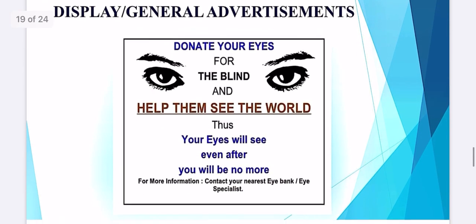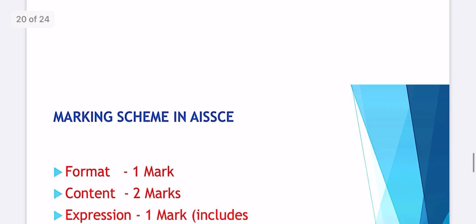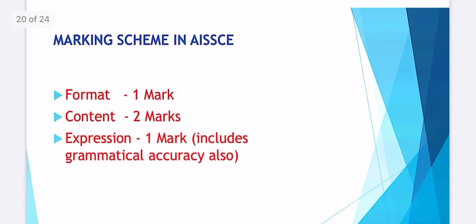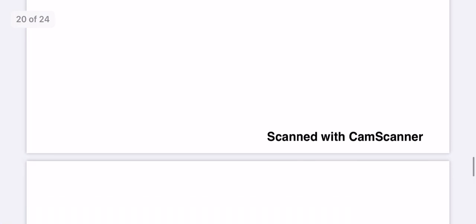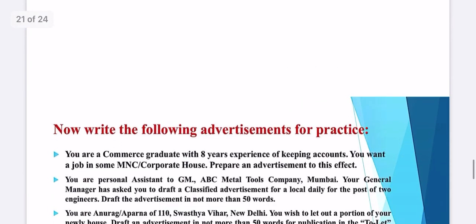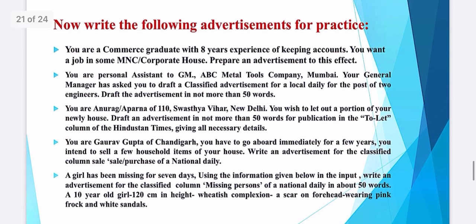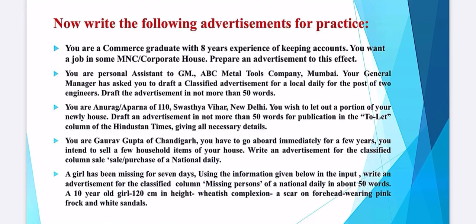Here's another advertisement: 'Help them see the world' — an advertisement for eye donation. These are a few advertisements which are part of your syllabus. The marking scheme is: format — one mark, content — two marks, expression — one mark, which includes grammatical accuracy. Format means the box and heading are present, content is written properly, and contact details come at the end. It is worth four marks in your syllabus.